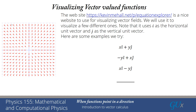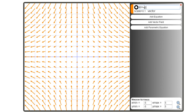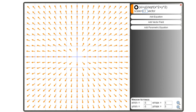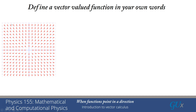Our next one is similar to the first but normalized. Here you can see we have unit vectors all pointing out, and then at the origin we have a clear singularity in the system because we do not know what direction that vector should point in. Now that you've seen these different ideas, I would like you to define what a vector-valued function is in your own words. We're going to pause the video now and allow you to do that.